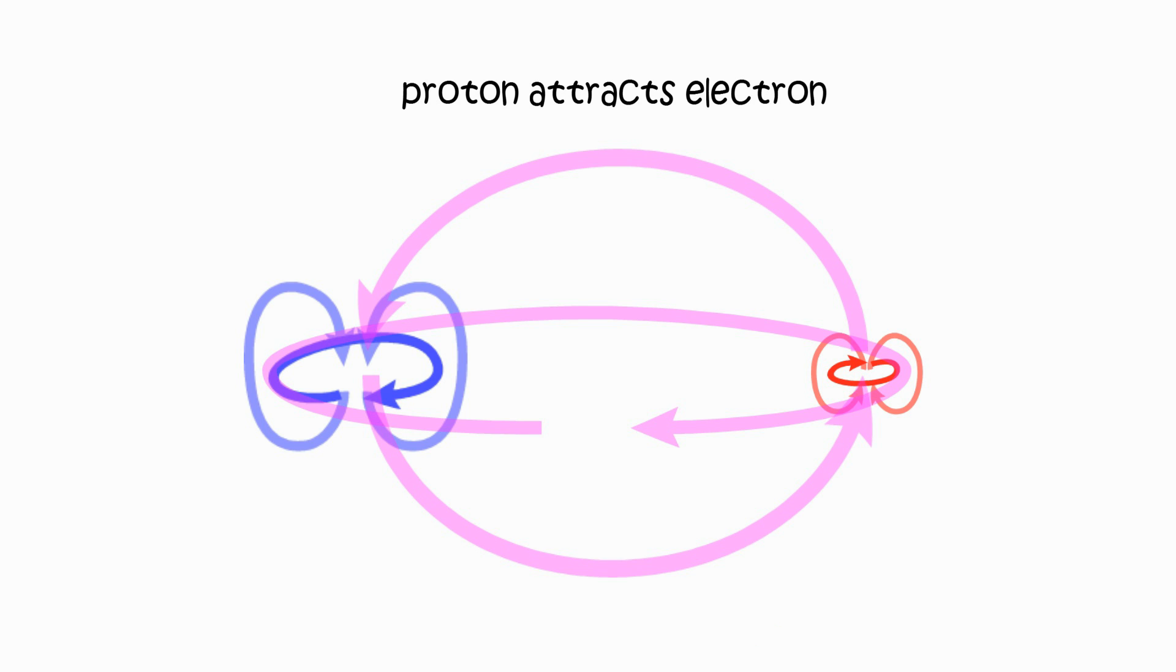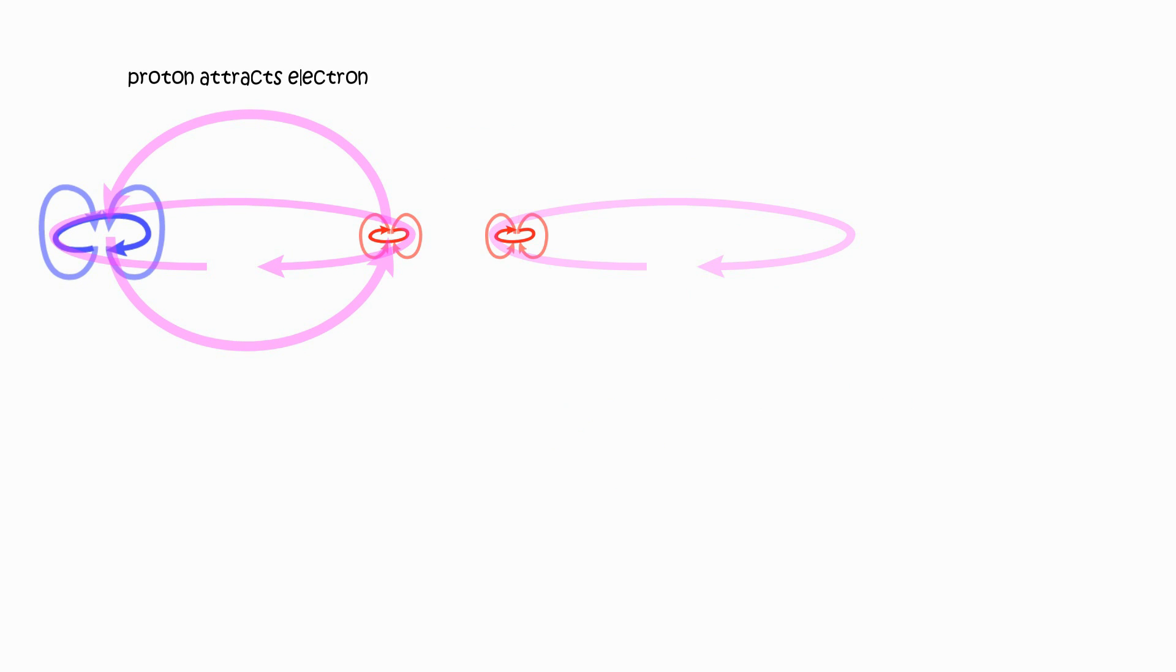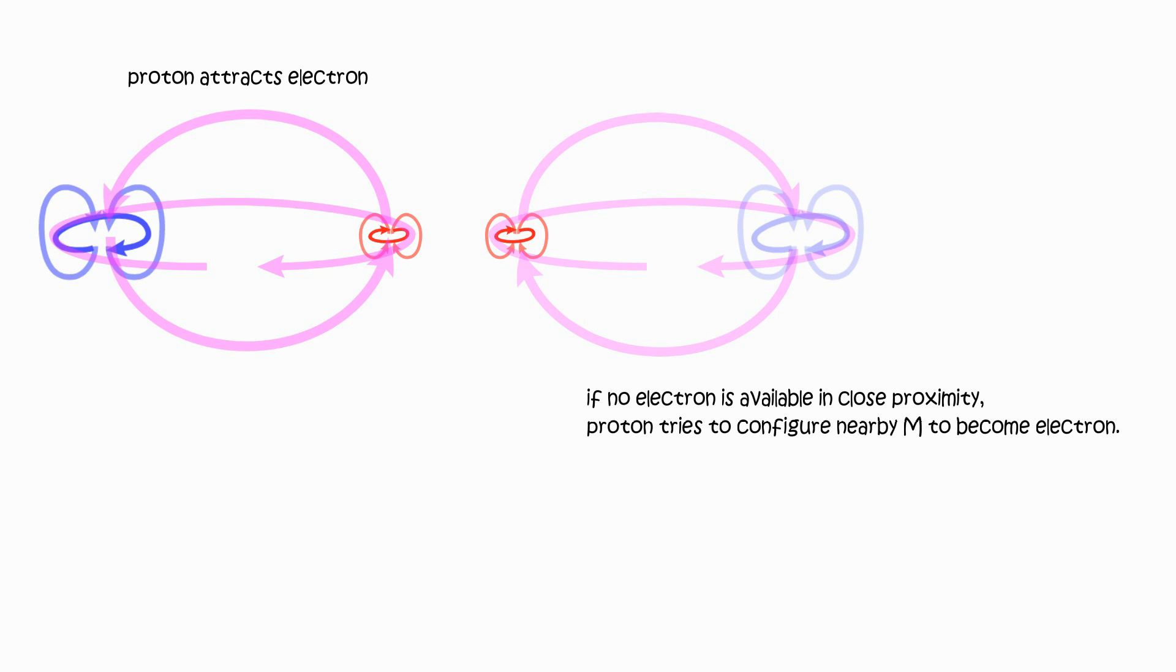Influencing configuration. Proton attracts electron. If no electron is in proximity, naturally proton's trajectories will attempt to create a new electron. Usually field density is too low for the faint image to actualize. An existing configuration will influence surrounding raw momentum into similar configuration.